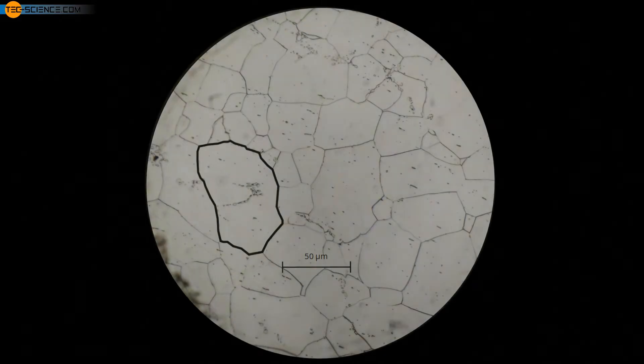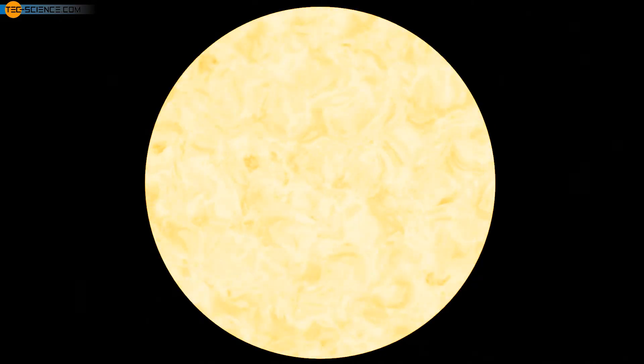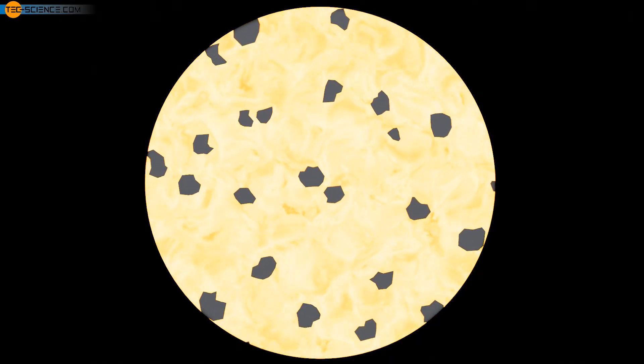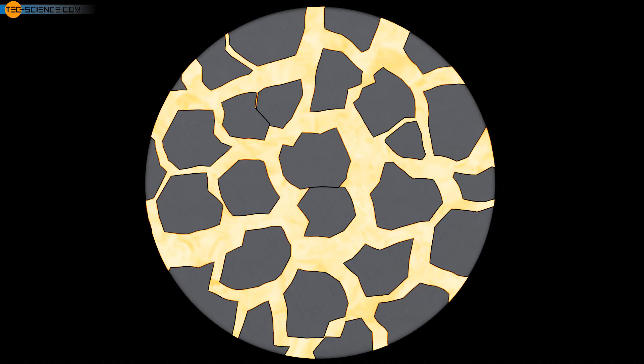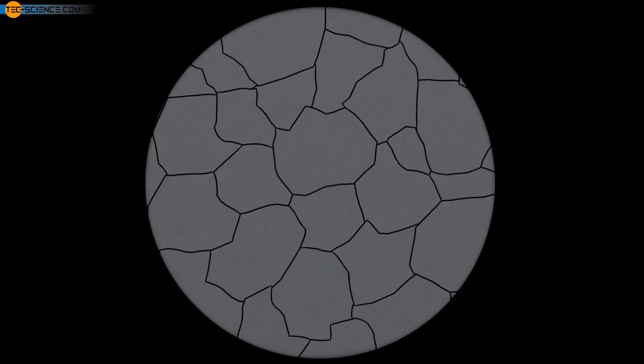The grain structure is formed as the molten metal solidifies, because a melt does not usually solidify at one point, but at many points simultaneously. At each of these solidification points, known as nuclei, the lattice is formed with its individual orientation. The growing grains touch each other after the melt has completely solidified, thus forming the grain boundaries.